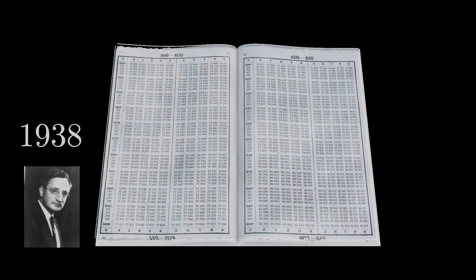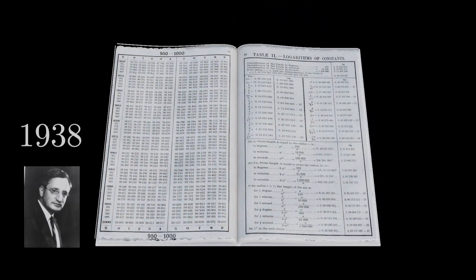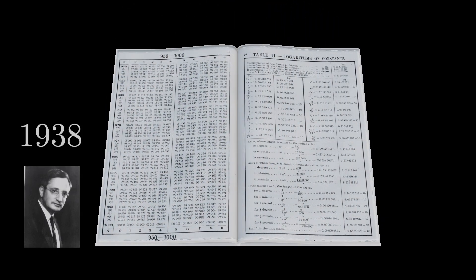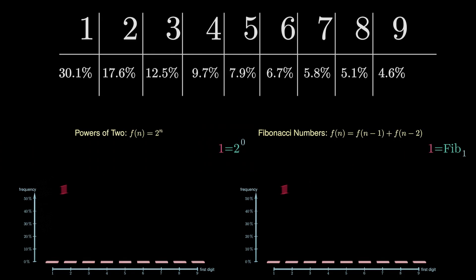The main statement goes as follows. Whenever there is data that stretches almost scale invariantly over a large range of orders of magnitude, the distribution of leading digits is given as follows. In about 30% of the values, the leading digit is 1. All other digits occur with decreasing probability.